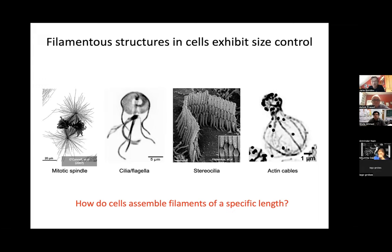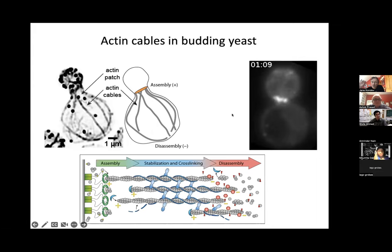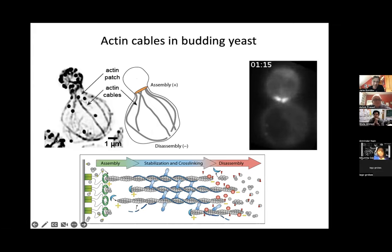What got me excited about this question is that yeast occur at different sizes in nature — the difference between haploid and diploid is quite large, and even among haploids there's variation. You can ask: do the cables scale to the size of the cell, or are they always a particular length? What we found is that in wild-type cells, regardless of their size, cables grow to reach the end of the mother cell. They grow in tens of seconds; if you inhibit growth and leave just disassembly, they're gone in tens of seconds too.